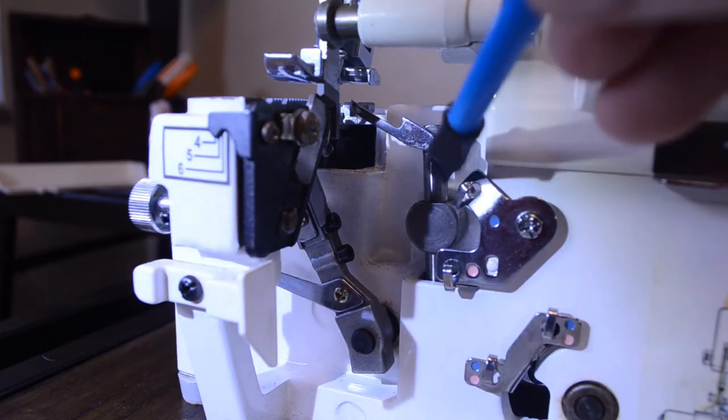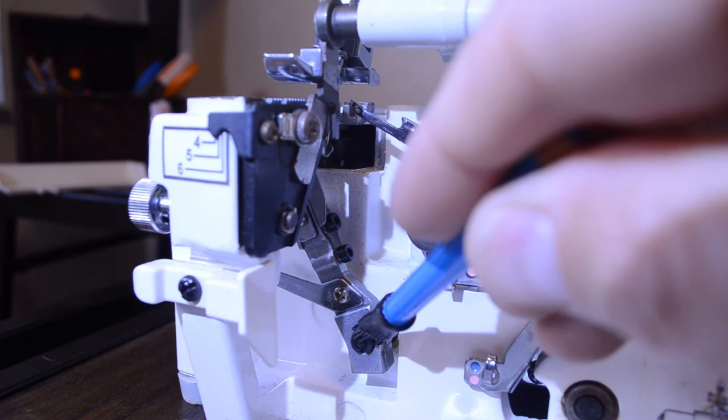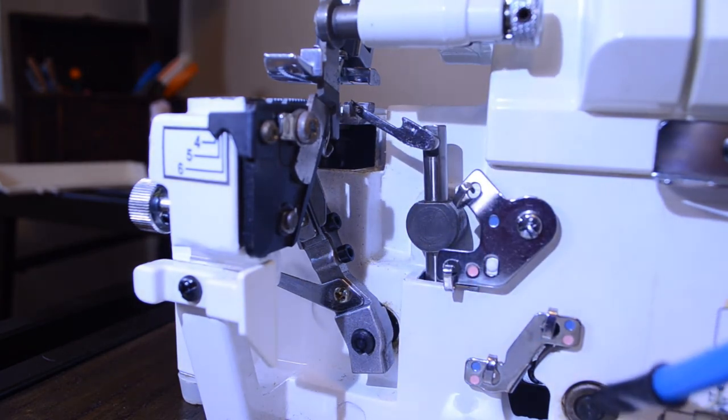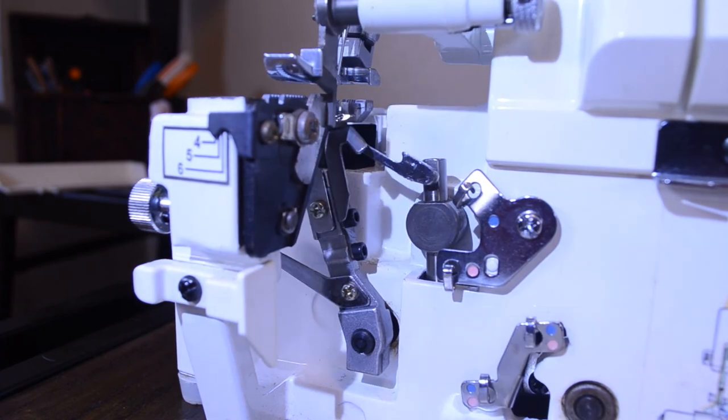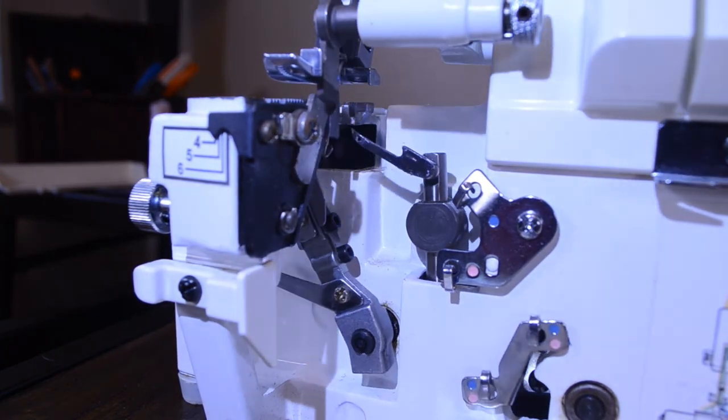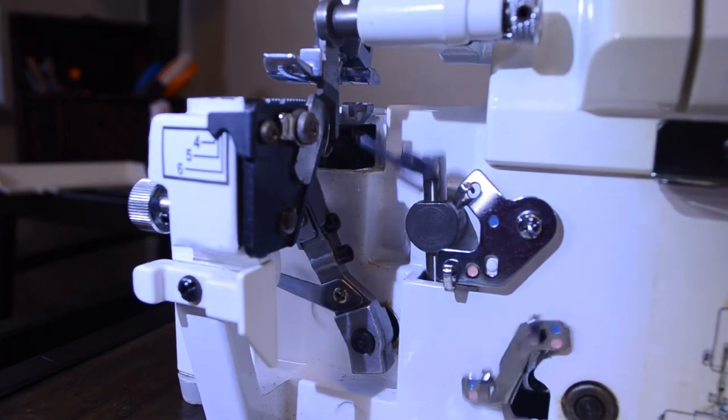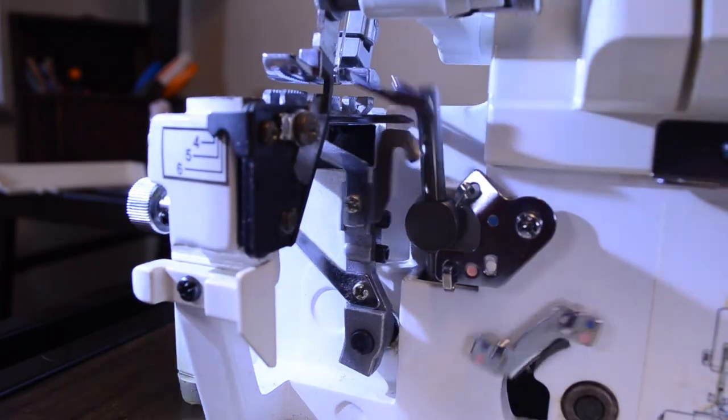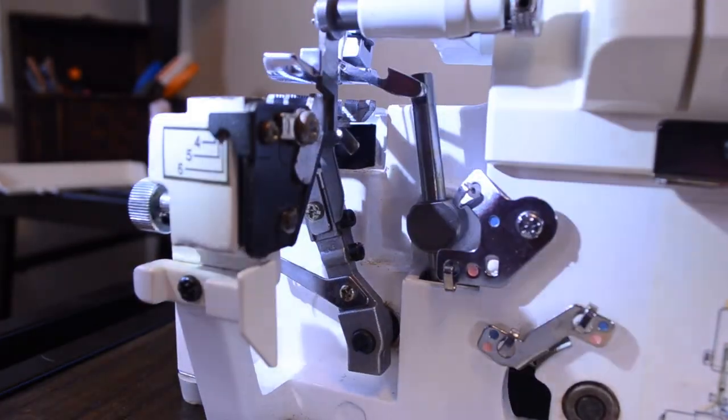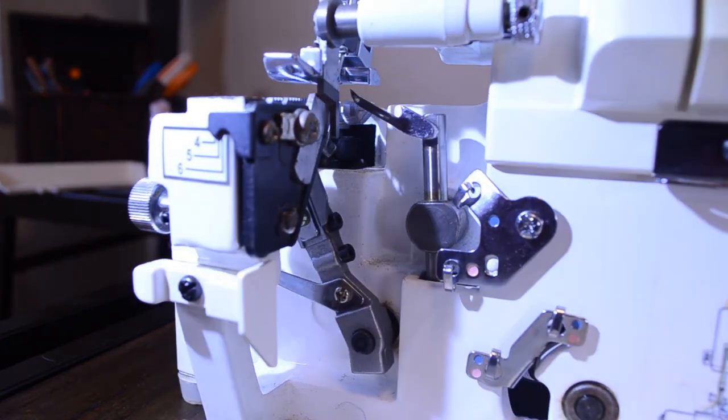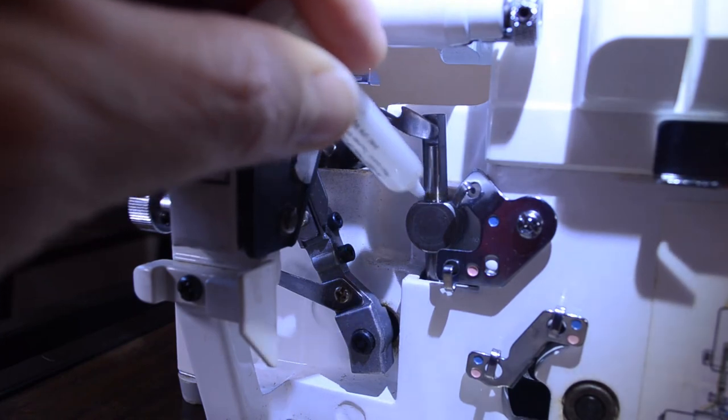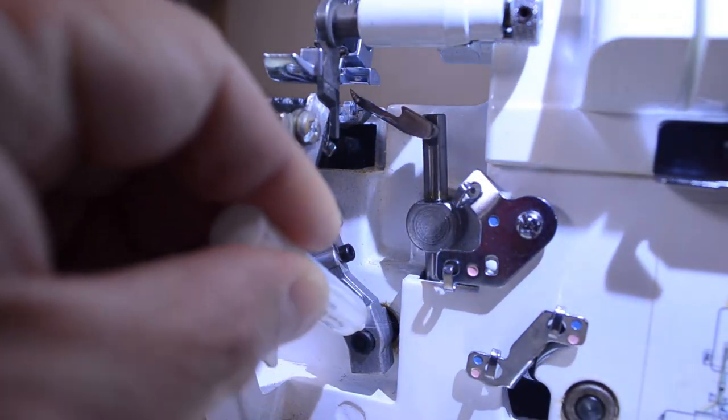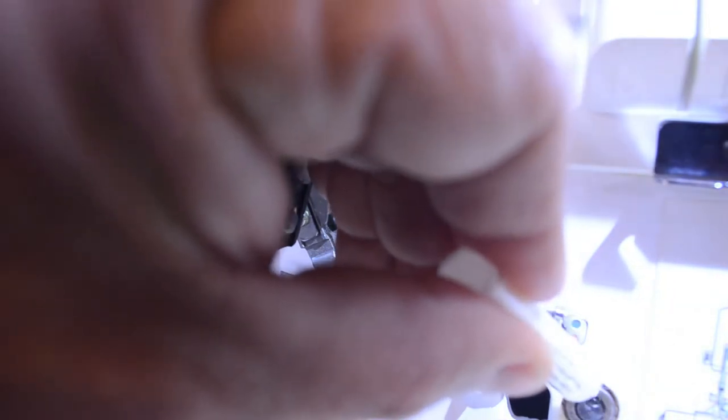So I'm going to have an oil point right there. And I'm going to have an oil point right there. And it looks like one right over here. Because those all turn when I turn the wheel. So I want to make sure I have a little bit of oil in all of those. And that should help keep this machine running well. Let's put a little bit right there. Let's put a little bit right there. Let's put a little bit right there. There we go.